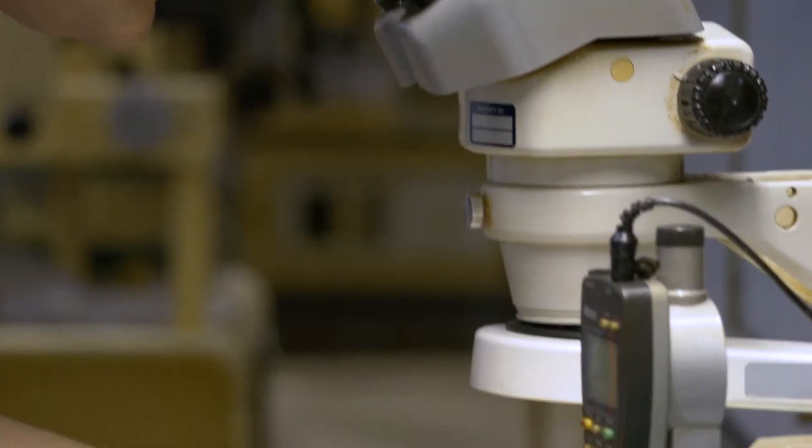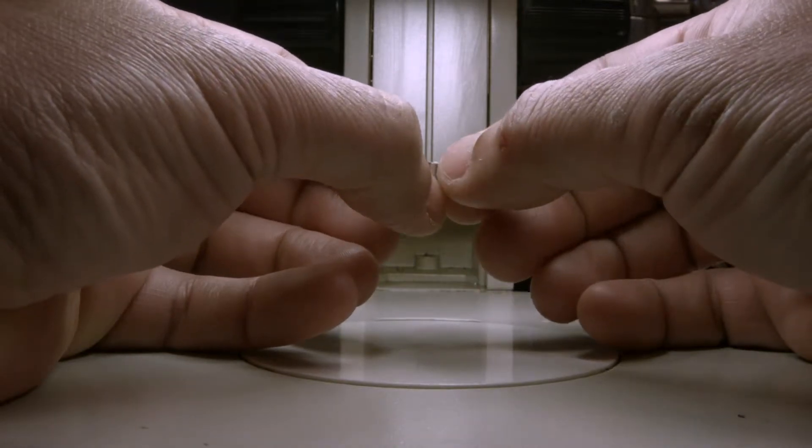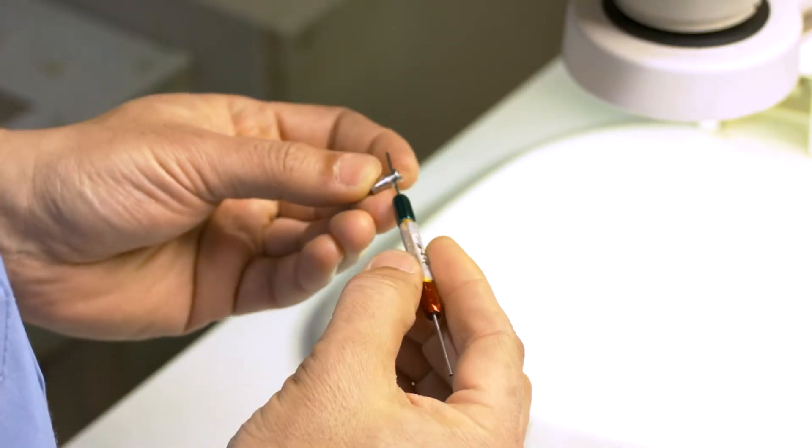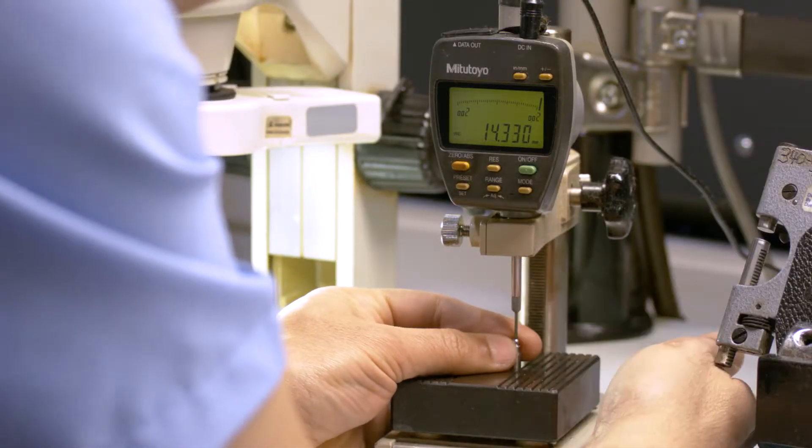It all starts in the temperature and humidity controlled engineering lab, where the parts are inspected to make sure they're within the specified tolerance range. For example, this digital micrometer validates overall product height.